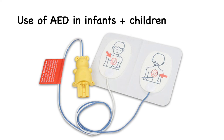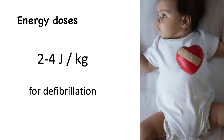The 2020 guidelines recommend the use of AEDs in children, and if one is available, also to use it for infants. If we have a manual defibrillator, it is preferable to use it because we can target the energy dose for the child — 2 to 4 joules per kg for defibrillation. The next best option is an AED with a pediatric dose attenuator, and the last option is an AED with adult pads.